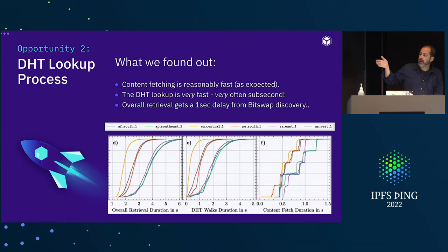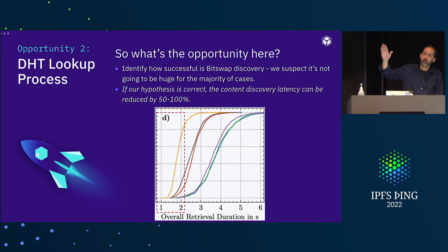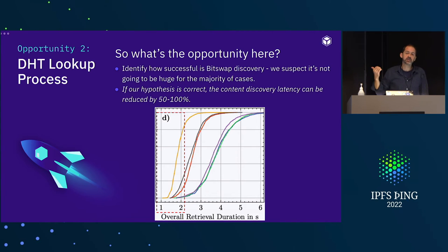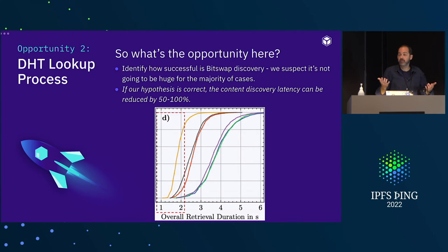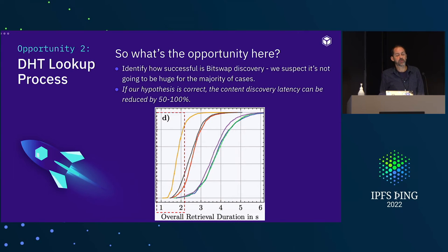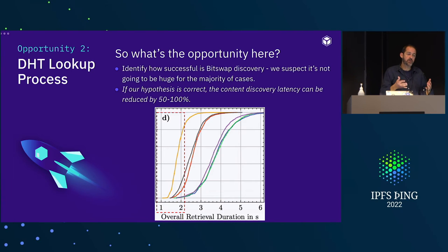The DHT has improved quite a bit — for a large part, it can be kept below one second, which is great performance. But why do we have to wait for this extra second? If BitSwap does not manage to find content, we're waiting one second and increasing the general retrieval process by more than perhaps 100% in some cases. We're now working on identifying what to do with the BitSwap process — should we start BitSwap discovery together with the DHT lookup so these two steps progress in parallel? This is the second opportunity we've identified.